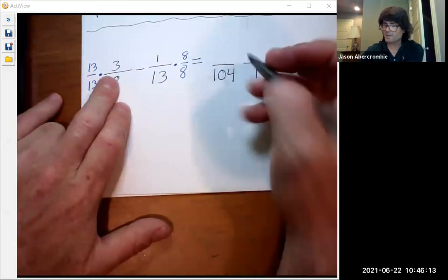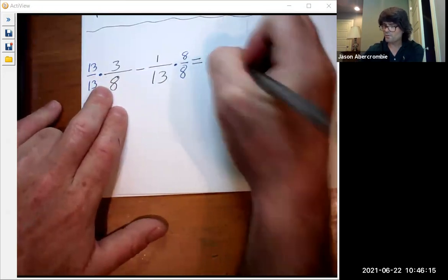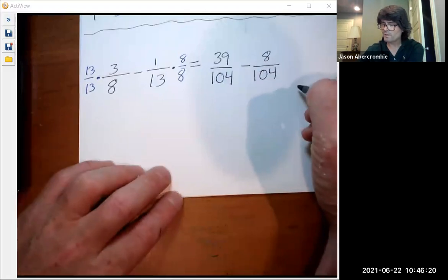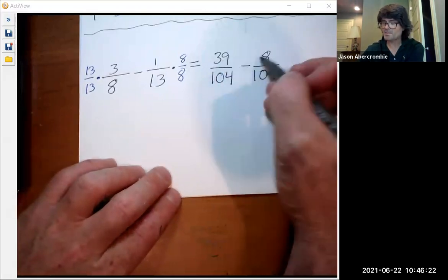And 13 times three makes 39 over 104. Then eight times one makes eight over 104.